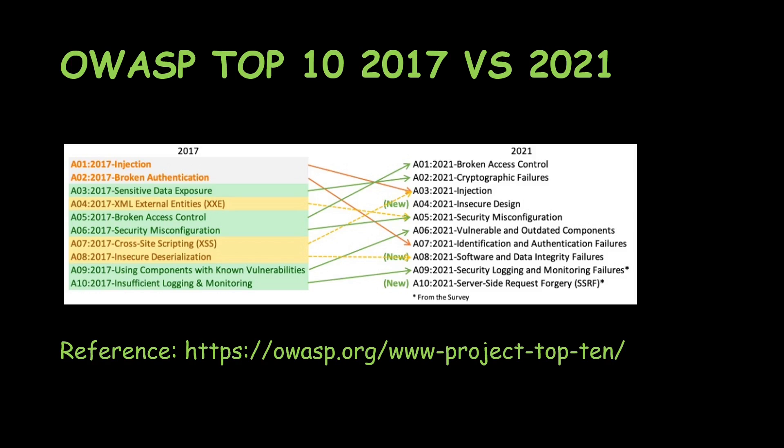Let's look at the comparison from 2017 — broken authentication was in position 2 in 2017 and it has now moved down to position 7 in 2021 as identification and authentication failures. So let's get started.